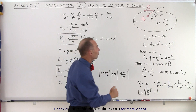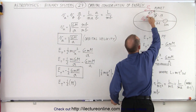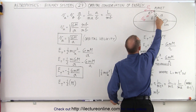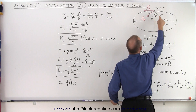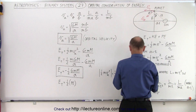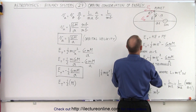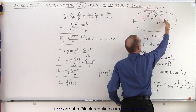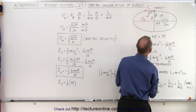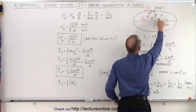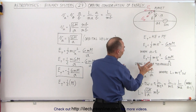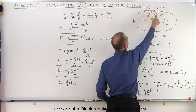Using similar triangles, notice that this line is perpendicular to this line, and this line is perpendicular to this line. We can see that this angle must equal this angle, and then the ratio of B over A must equal the ratio of V_theta over V_A. We can do that due to similar triangles, realizing that those two angles are the same.